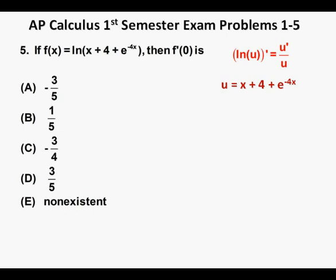And u prime equals 1 plus negative 4 times e to the negative 4x, which we can rewrite as u prime equals 1 minus 4e to the power of negative 4x.